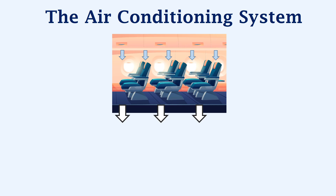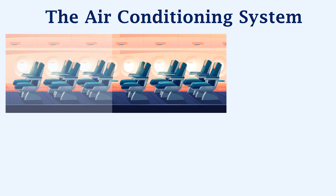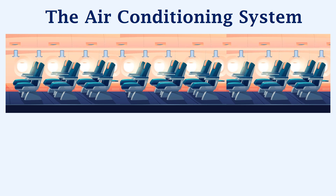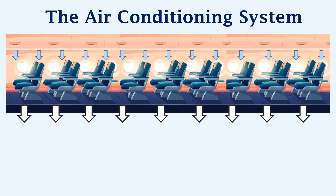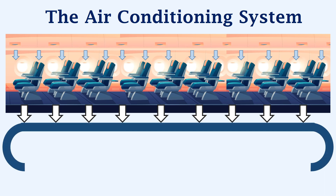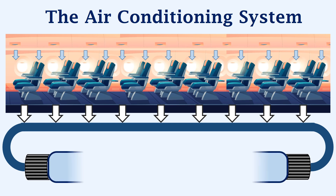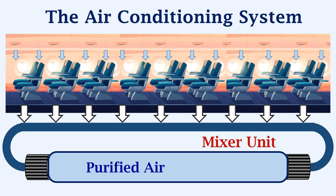This is the impure air, which may contain dust, bacteria, or even viruses. Across the entire cabin section, the air is distributed by vents on the top, and the impure air is sucked out by vents placed at the bottom. The impure air that is collected is sent through specific air ducts for purification. This purification is done by passing the air through the HEPA filter, which is able to remove 99.9% of the impurities. This purified air is sent to the mixer unit, which also receives fresh air from the air conditioning pack. The mixer unit mixes the purified air and the fresh air, which is then sent for distribution in the aircraft.